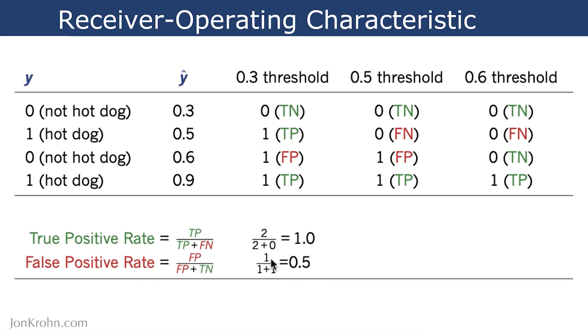Going through the numbers here for the false positive rate, we have one false positive. In the numerator, we have a false positive and a true negative. So 1 divided by 2 gives us 0.5. We do the same thing for the 0.5 threshold. So now we have one true positive, but we also have a false negative. So now our true positive rate is 0.5.